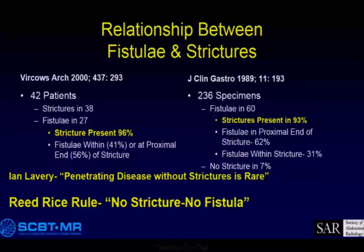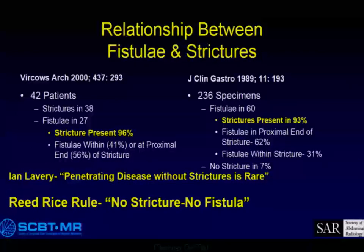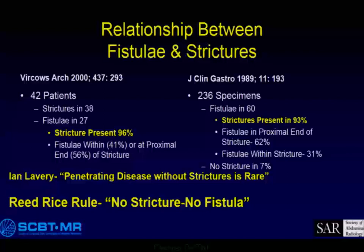There is a very strong relationship between fistulae and strictures. One study found that when there were fistulae, a stricture was present 96% of the time, and another 93% of the time. In my book, 90% or greater in the human system is always. Ian Lavery, probably the most experienced colorectal surgeon at the clinic, says penetrating disease without stricture is rare. Reed Rice taught me: no stricture, no fistula. So if there's a stricture, look for a fistula; if there's no stricture, it's highly likely it doesn't exist.